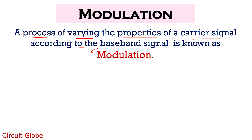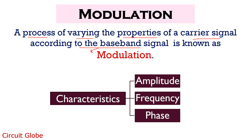The three main characteristics which undergo change while modulating a signal are amplitude, frequency, and phase. According to these three particular characteristics which undergo change according to the message signal, modulation is classified.